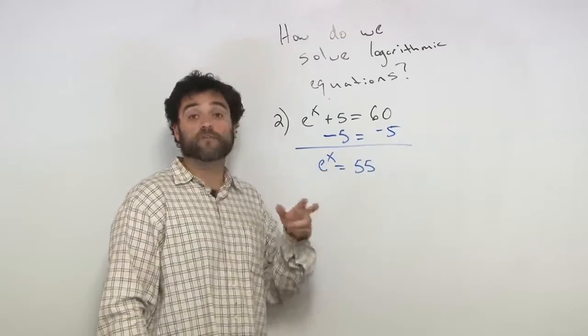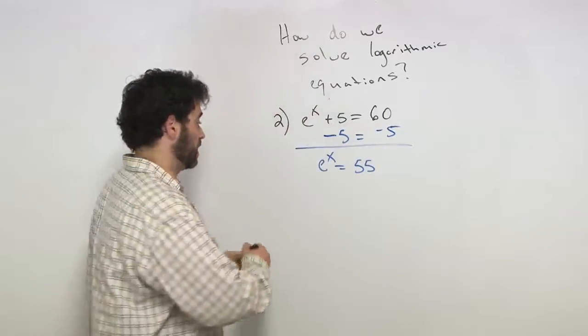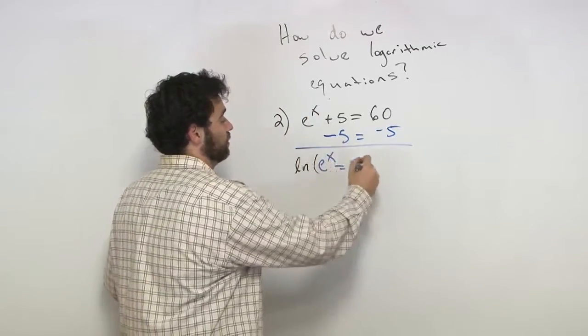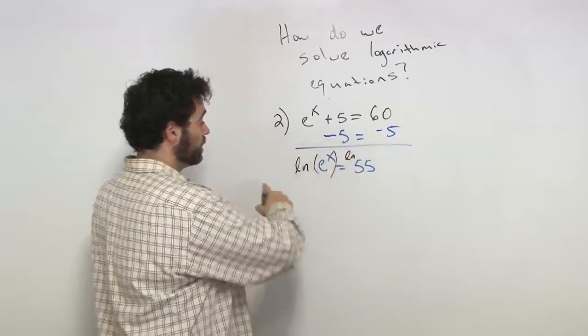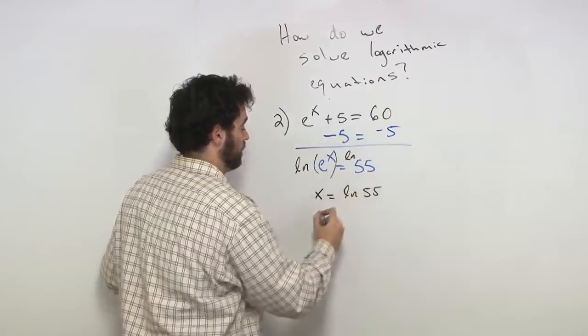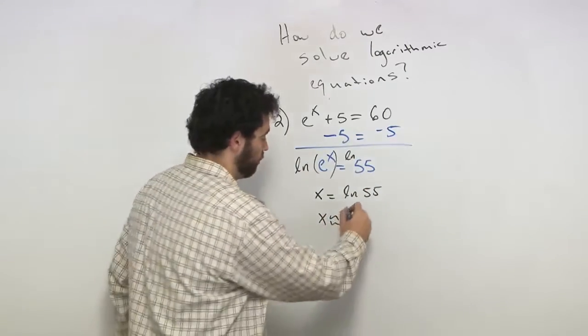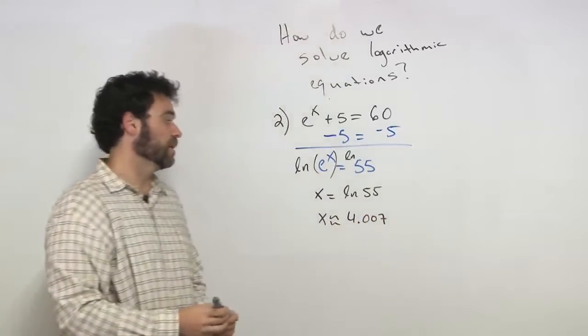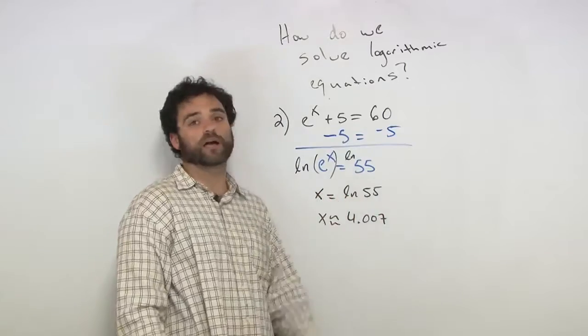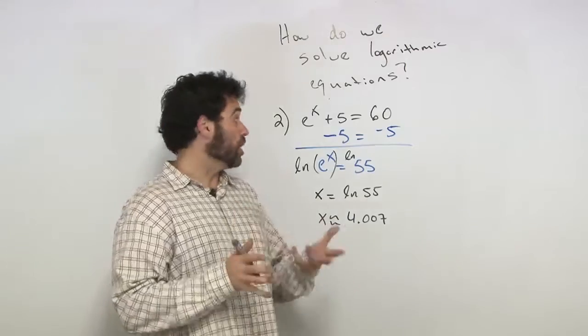Remember, we got to get that x by itself. I'm going to hit both sides with natural log, the inverse of e to the x. So, I'm going to say natural log, natural log. Cancels out. We get x is equal to the natural log of 55, and x is approximately 4.007. Again, approximations, not exact answers. This is your exact, natural log of 55. Not too bad. Nothing too taxing. Let's look at another one of these.